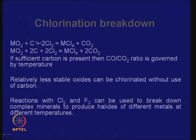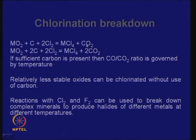Depending on the temperature at which this is happening, either CO2 or 2CO will be produced — please correct to 2CO where needed. If you go beyond 900 or 1000°C you will have more CO, and at lower temperatures you have more CO2. If sufficient carbon is present, the CO to CO2 ratio is governed by the temperature. Relatively less stable oxides can be chlorinated without carbon, but when the oxides are stable, you will need carbon.